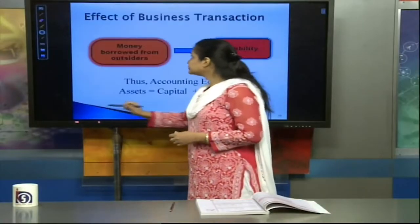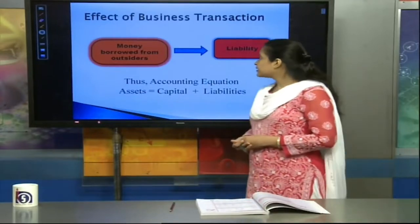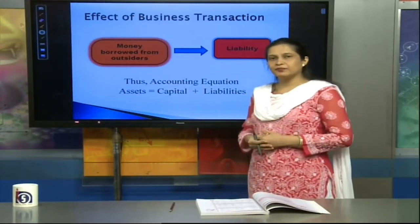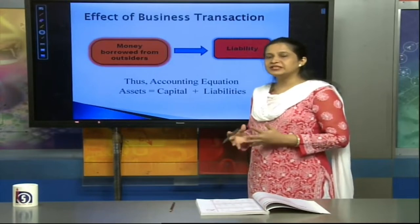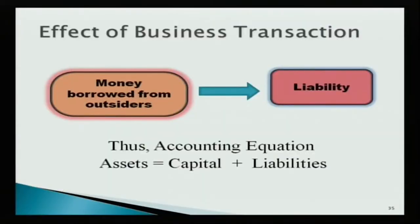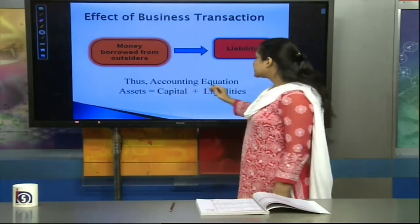Let us know more about this. Besides, there are many business transactions — such as when you borrow money from a business firm, then the firm creates a liability. This is the accounting equation; we also write liabilities with capital. This is money borrowed from outsiders. So, assets is equal to liabilities, which is the common term. When we break it down, we write: Assets = Capital + Liabilities.